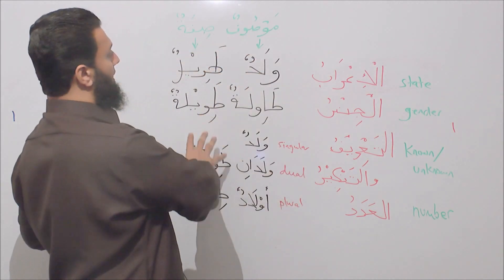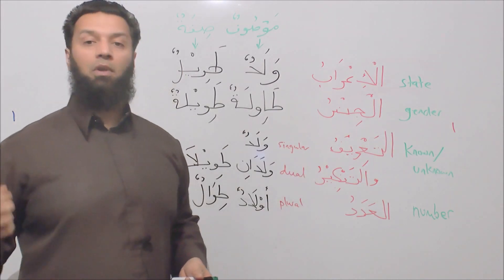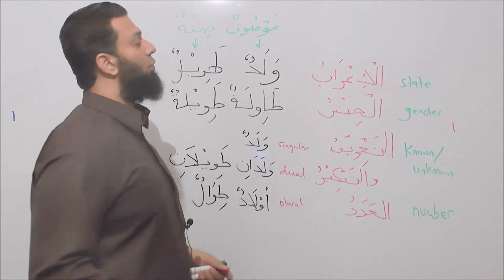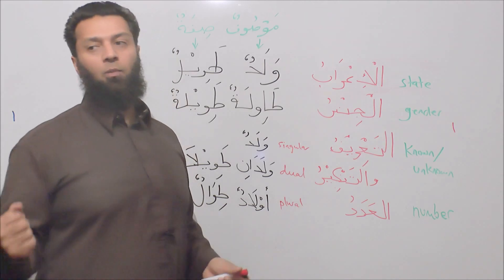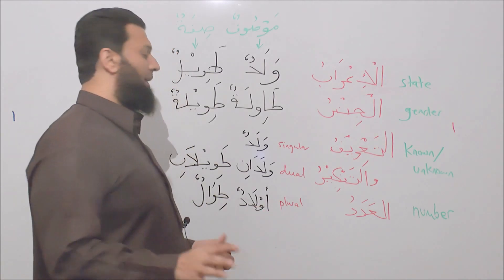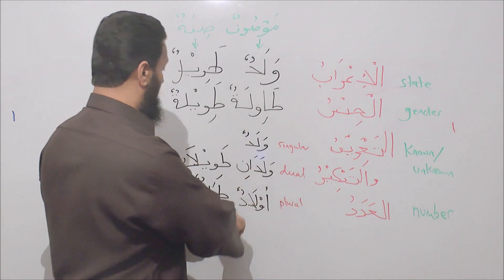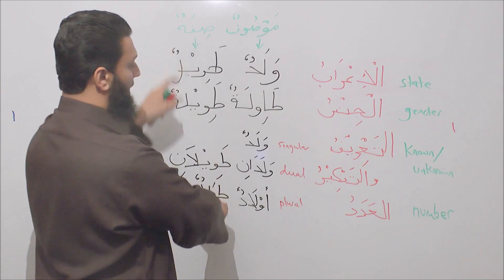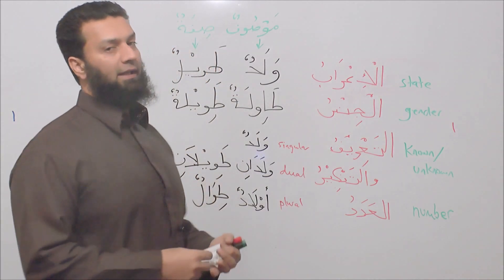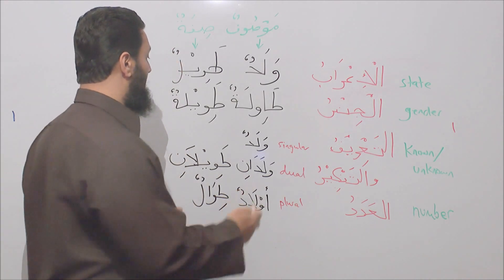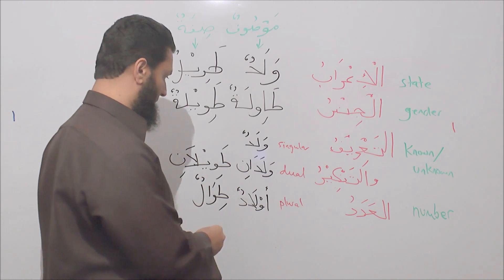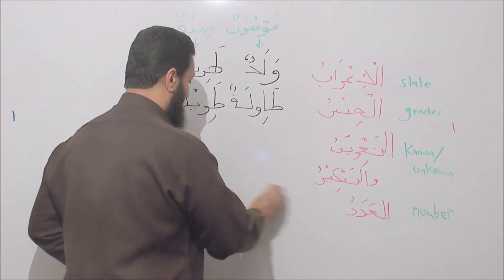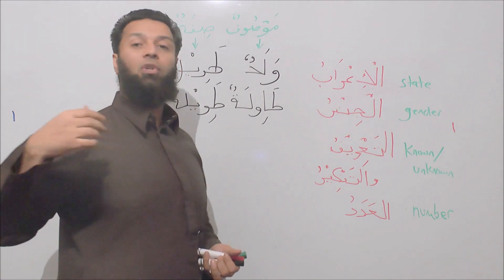All of these examples have been mentioned in the marfuun state, but we could easily change them — and we did mention ra'a waladan tawilan and li waladin tawilin to indicate different states. All instances still fulfill the rules of agreement between sifatun and mawsufun. The only other point to mention before we conclude: even though the sifatun of a plural mawsufun must normally be plural to match in al-adad, there is an exception.